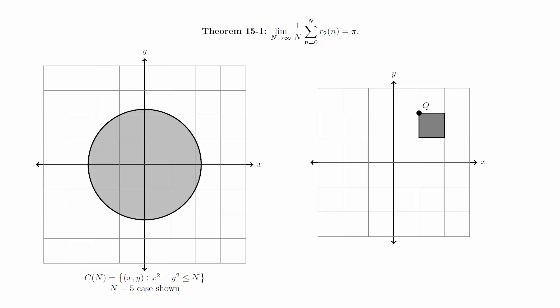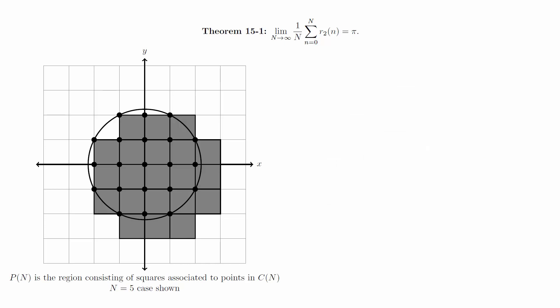For each lattice point q in c(n), we will associate the unit square of which q is the upper left corner, and we will let p(n) denote the union of all of these squares. Notice that since each point corresponds to a square of area 1, we have another way to compute this sum.